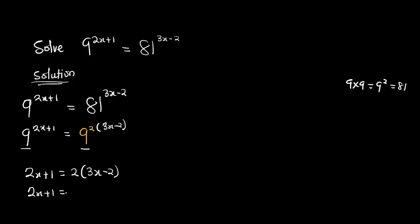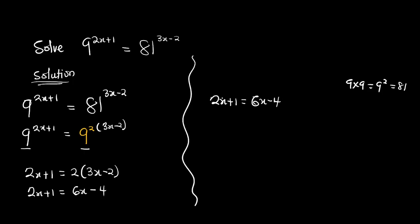So 2x plus 1 equals 2 multiplied by 3x minus 2. Expanding the bracket: 2 times 3 gives 6x, minus 2 times 2 gives 4. So 2x plus 1 equals 6x minus 4. Grouping like terms: I send 2x to the right and bring negative 4 across as positive 4. So 1 plus 4 gives 5, and 6x minus 2x gives 4x.